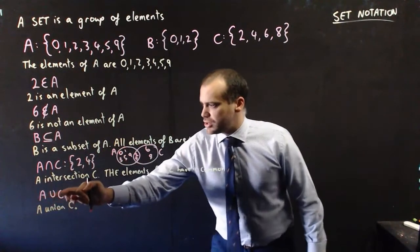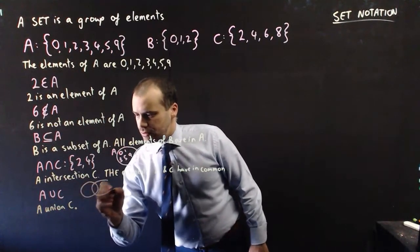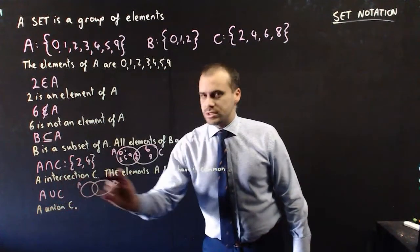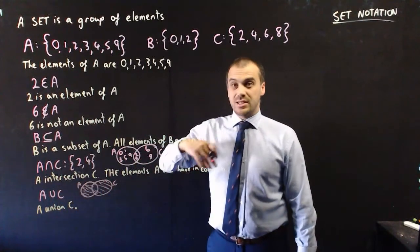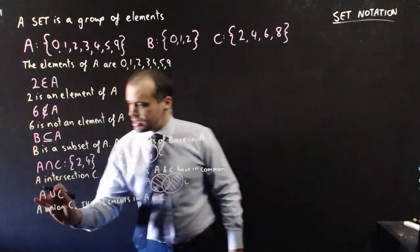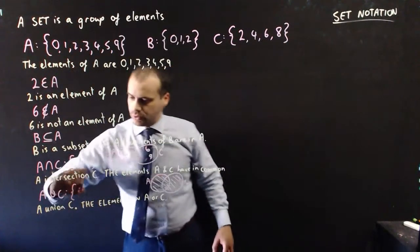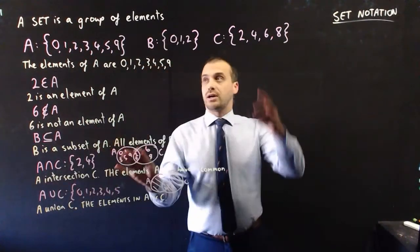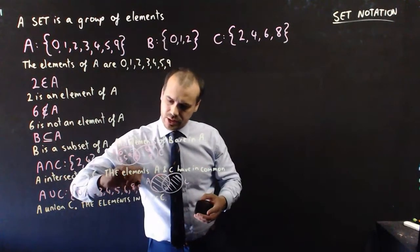Next one is A union C. Talking in terms of our Venn diagrams again, we have the set A and the set C. A union C represents everything that is in A or C. So the set A union C is made up of the elements 0, 1, 2, 3, 4, 5 — there's a 6 in that one, no 7s, but there is an 8 and a 9.